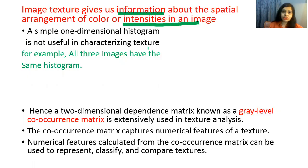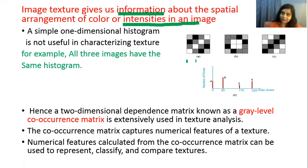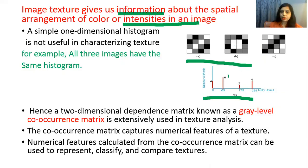Why can't we use a histogram of an image for texture analysis? Looking at three example images: in these three images, the number of gray intensity values and number of pixels are the same, but their arrangement is different. There are four white pixels, four black pixels, and six gray value pixels in all images. The gray levels are the same but their arrangement is different — yet the histogram of all three images is the same.